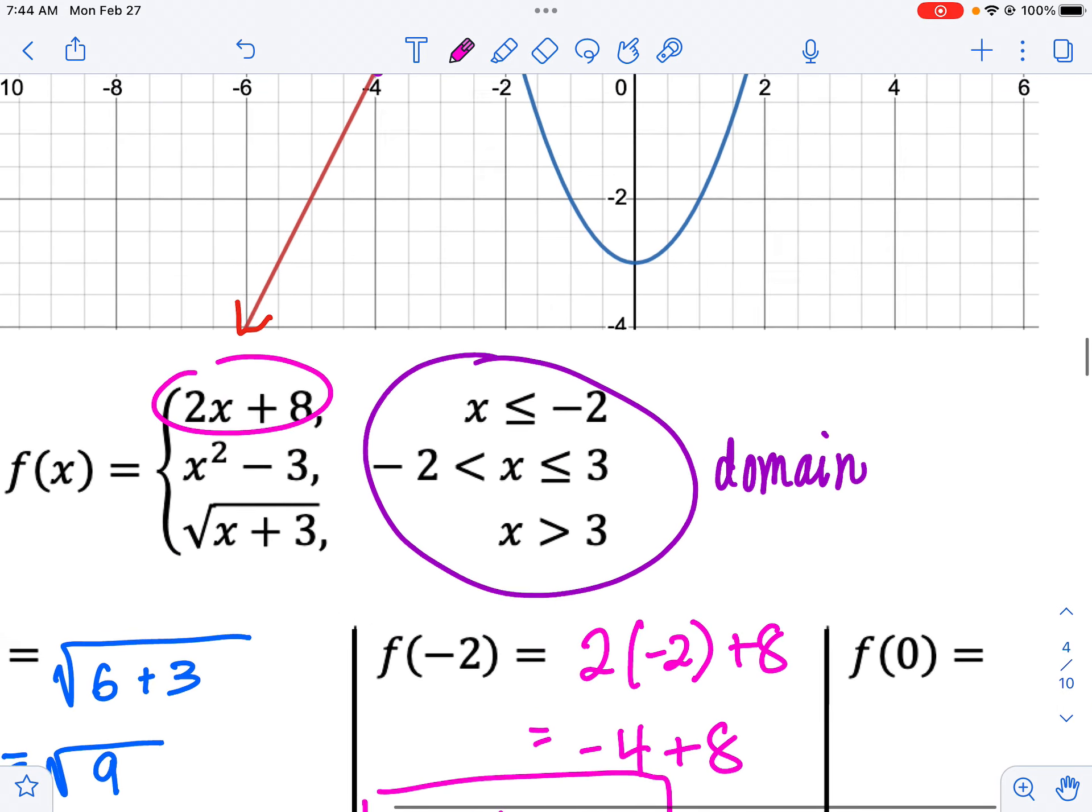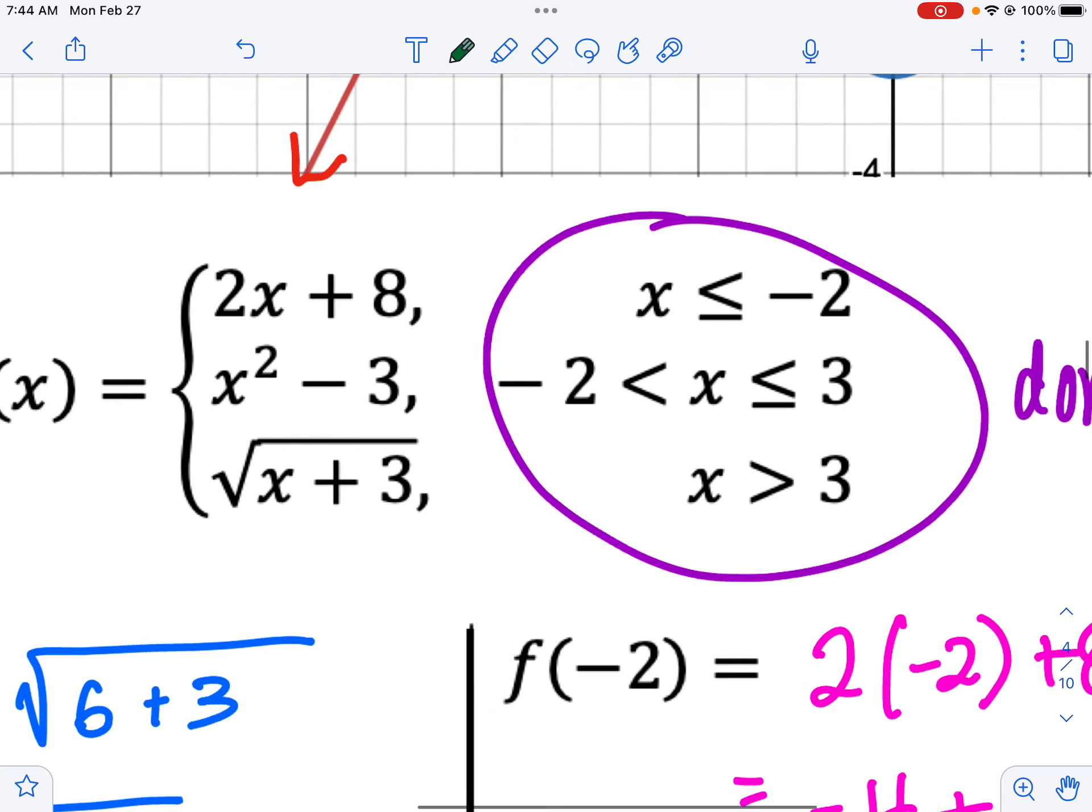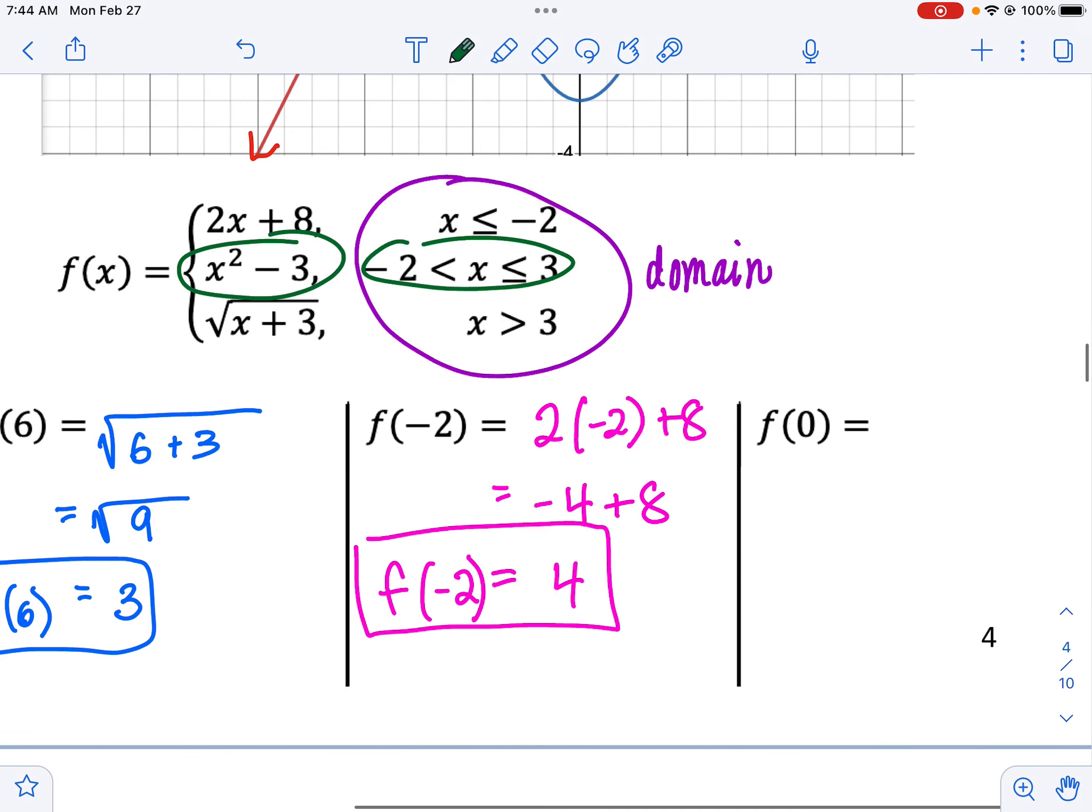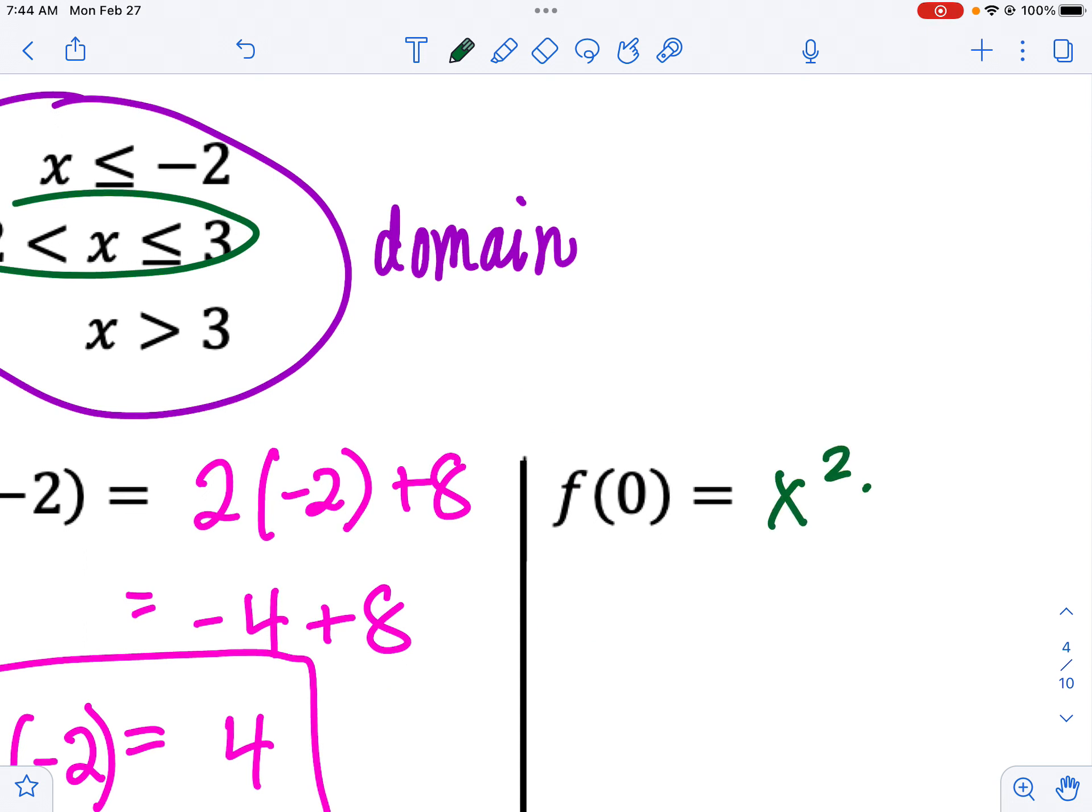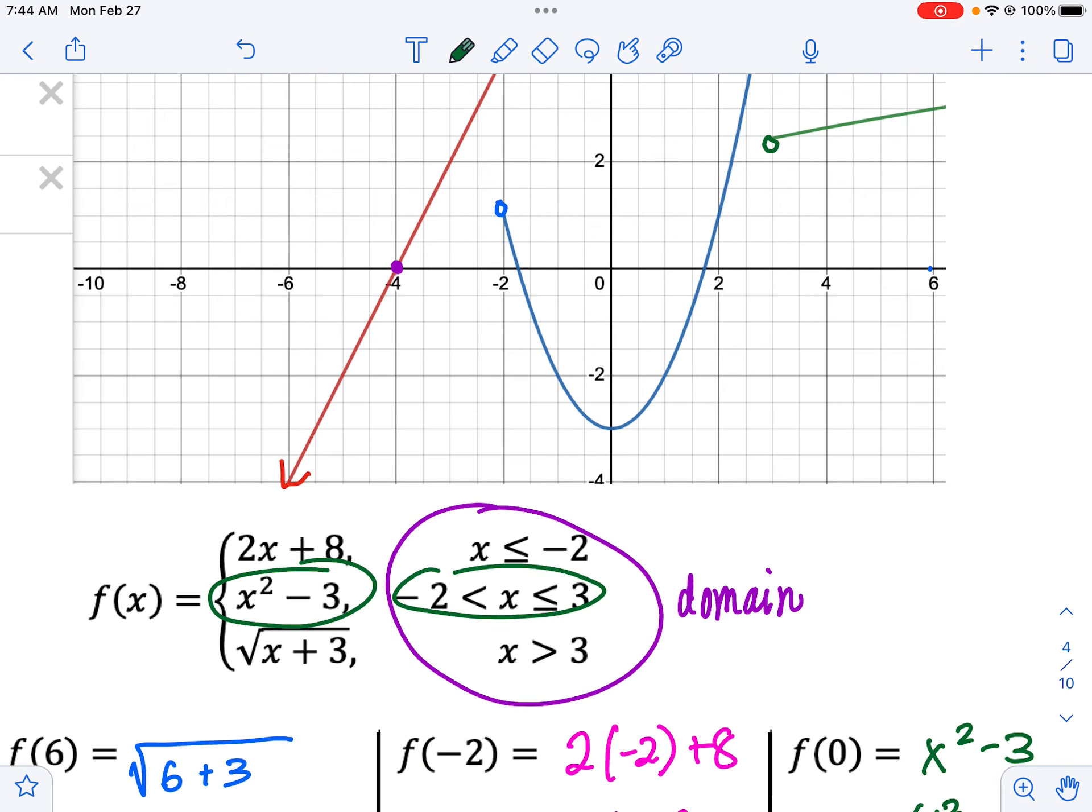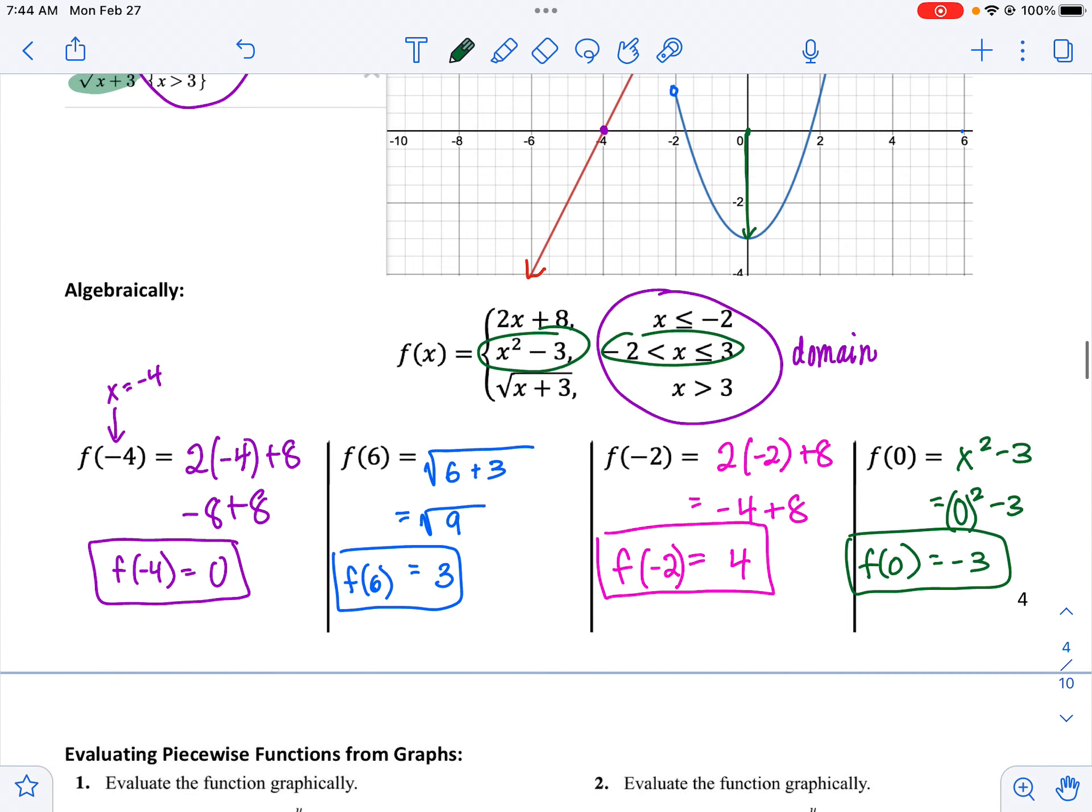And our last one, f of 0. Okay let's find that one. And again I'll switch colors here. Let's use green. So f of 0. And that's in between negative 2 and 3. It's this x squared minus 3. Oh I should plug in a 0. So 0 squared minus 3. 0 squared is 0. 0 minus 3 is negative 3. So when you plug in a 0, the y value of the output is negative 3. And we can test it. Here's when the x value is 0, and you can see yep that does go to negative 3 right there.